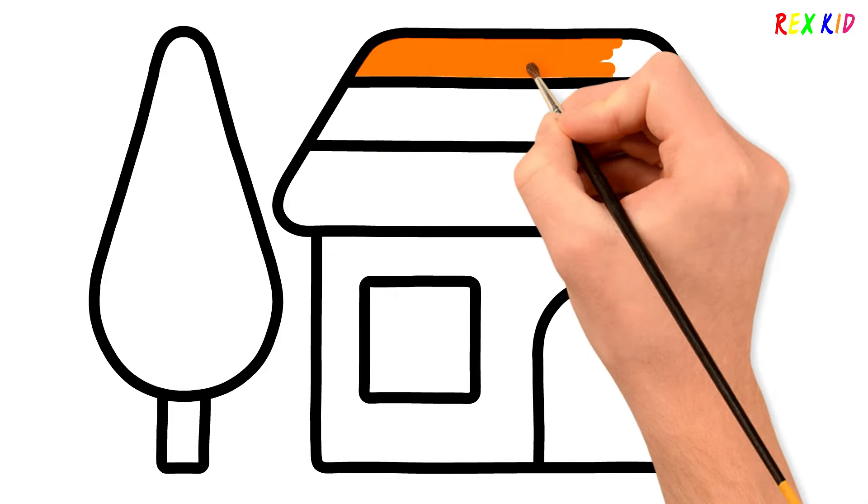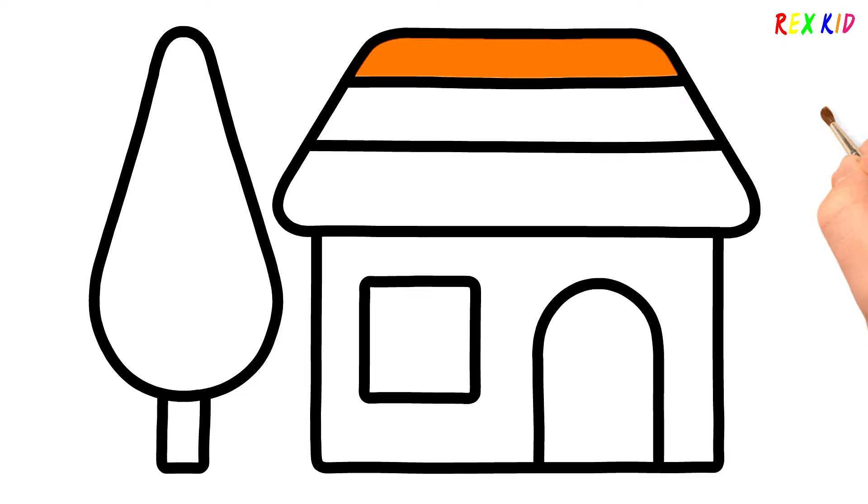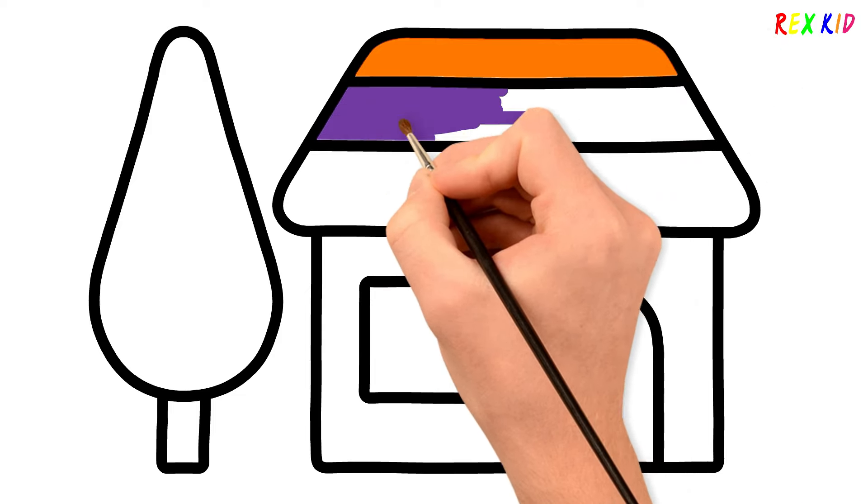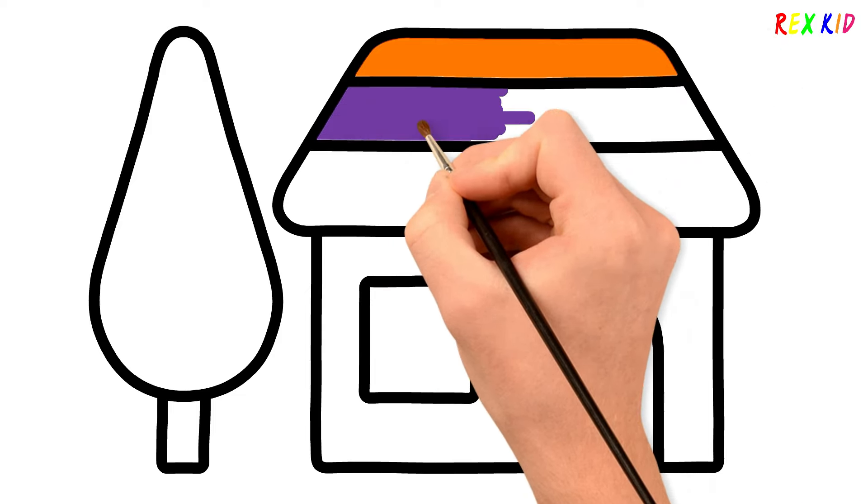Orange, I'm going to paint the roof with three colors. Purple, this house is so simple and beautiful. Blue, yellow.